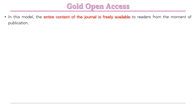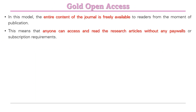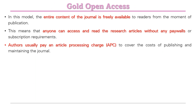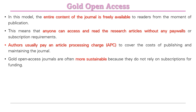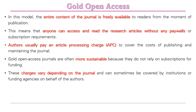In the gold open access model, the entire content of the journal is freely available to readers from the moment of publication. Anyone can access and read the research article without any paywall or subscription requirement. Authors pay APC charges to cover the cost of publication and maintenance. Gold open access journals are the most sustainable because funding comes from authors, ensuring journals always have sufficient funds. These charges vary depending on the journal's standards, quartile, and impact factor, and can sometimes be covered by institutions or funding agencies.